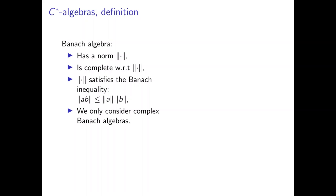First, let's go over the definitions. A Banach algebra is an algebra with a norm, denoted in the usual way, which is complete with respect to this norm — meaning every Cauchy sequence in the algebra converges in the algebra. The norm satisfies the Banach inequality: the norm of a product ab is less than or equal to the norm of a times the norm of b. We only consider complex Banach algebras, i.e., algebras over the field of complex numbers.